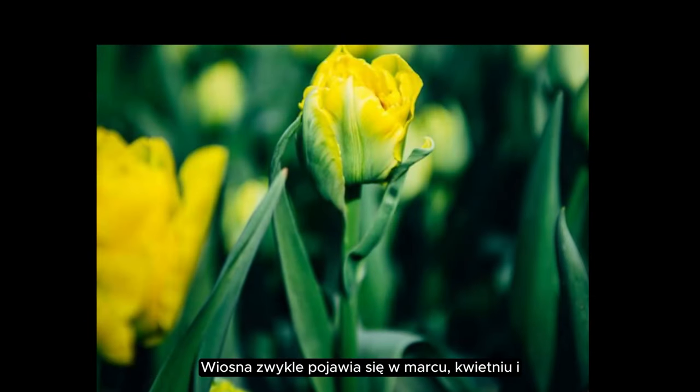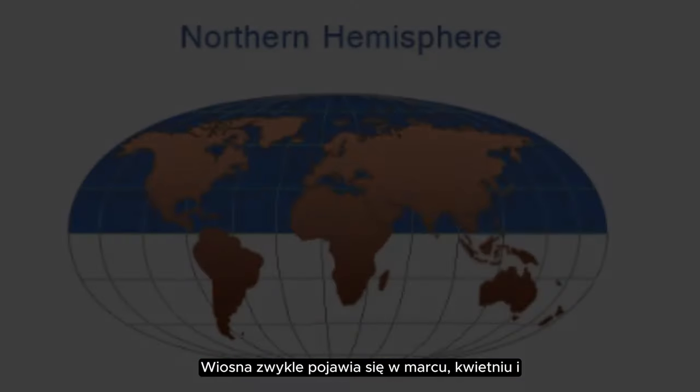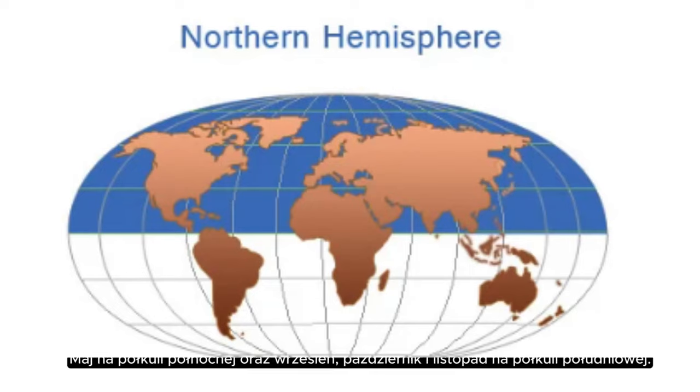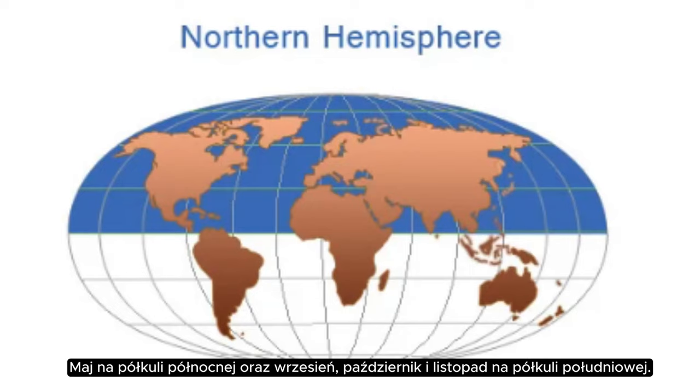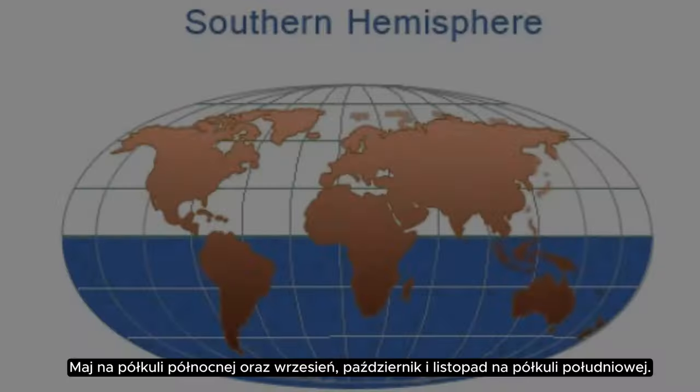Spring typically occurs during March, April, and May in the Northern Hemisphere, and September, October, and November in the Southern Hemisphere.